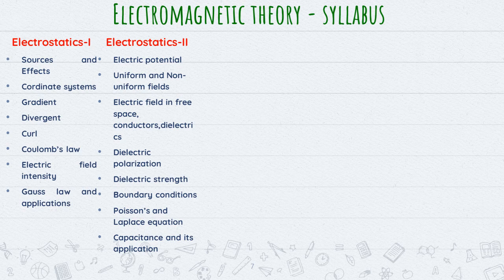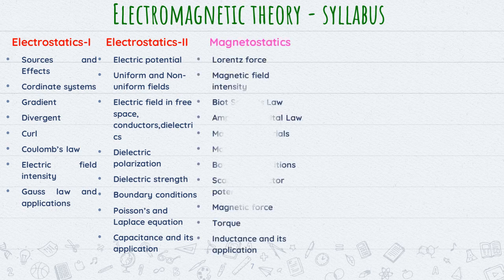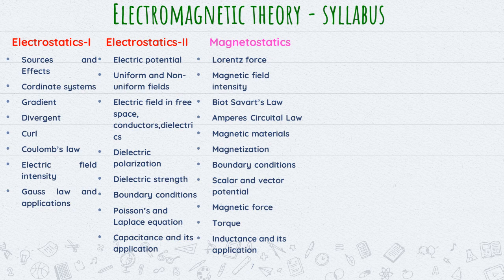The second part covers electric potential, dielectric polarization, dielectric strength and applications. Capacitance is the application of Electrostatics. So Electrostatics is split into Unit 1 and Unit 2. The third unit belongs to Magnetostatics.